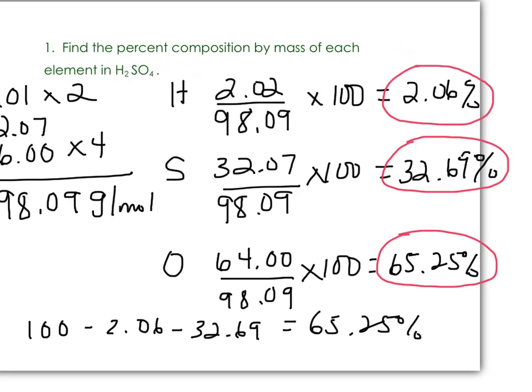So what these percents are telling us is that almost two-thirds of this molecule's mass is due to the oxygen, and a very small percent is due to the hydrogen.